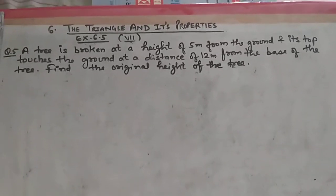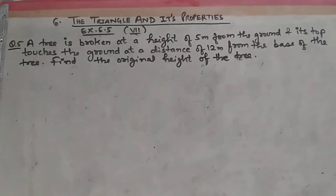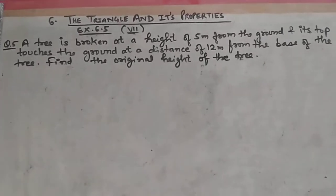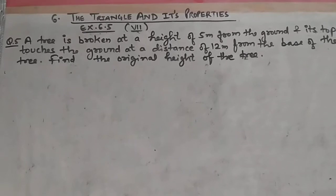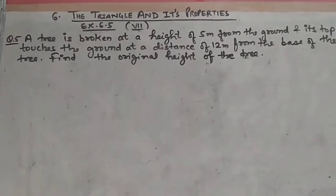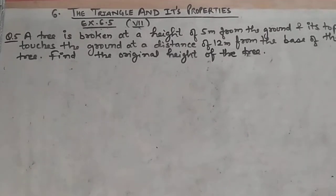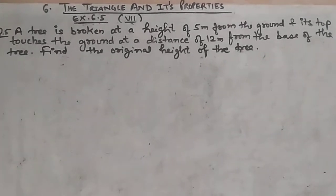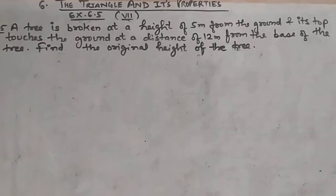Hello everyone, welcome to my channel NCERT Learning Hub. Subscribe to the channel. The question is from Exercise 6.5. A tree is broken at a height of 5 meters from the ground and its top touches the ground at a distance of 12 meters from the base of the tree. Find the original height of the tree.